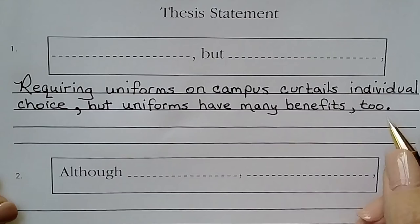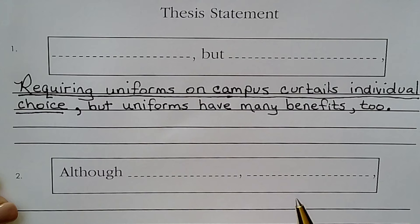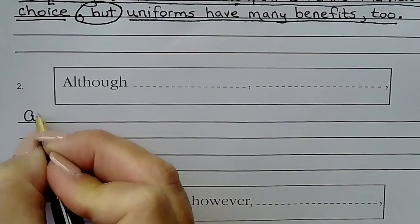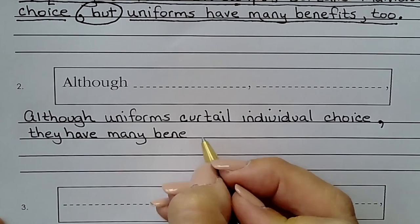The first independent clause acknowledges our opposition side — that uniforms curtail or restrict individual choice. By providing this counterclaim, we honor and even anticipate our opposition's opinion. The second independent clause provides our side of the argument — that uniforms have many benefits. We separate these two independent clauses with a comma and the coordinating conjunction "but." Here's a second example of an open thesis: Although uniforms curtail individual choice, they have many benefits.